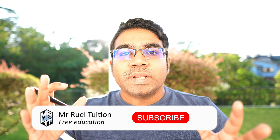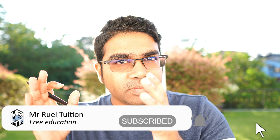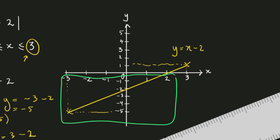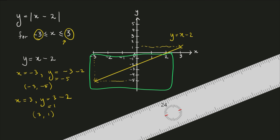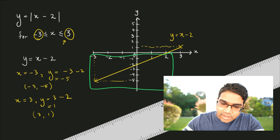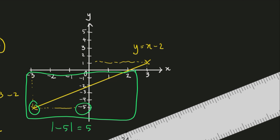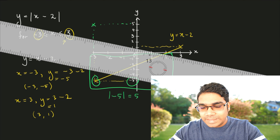We haven't applied the modulus yet. What the modulus does is: whatever value is in the negative Y region — because the modulus is applied to Y, as in Y equals modulus of a function — will be made positive. To identify the negative Y region: this part of the graph contains all negative Y values. For example, the Y value of negative 5, when modulus is applied, becomes positive 5. This point moves up, with no change to the X value. When we do this for every point, we get a reflection in the X-axis.